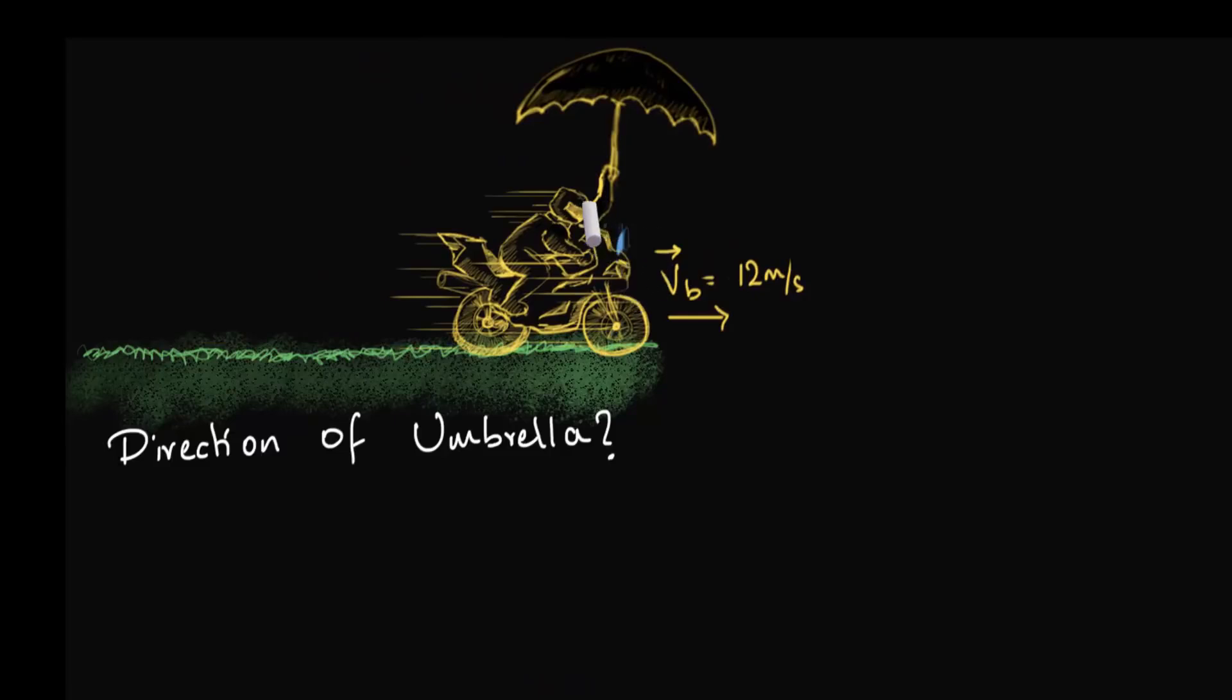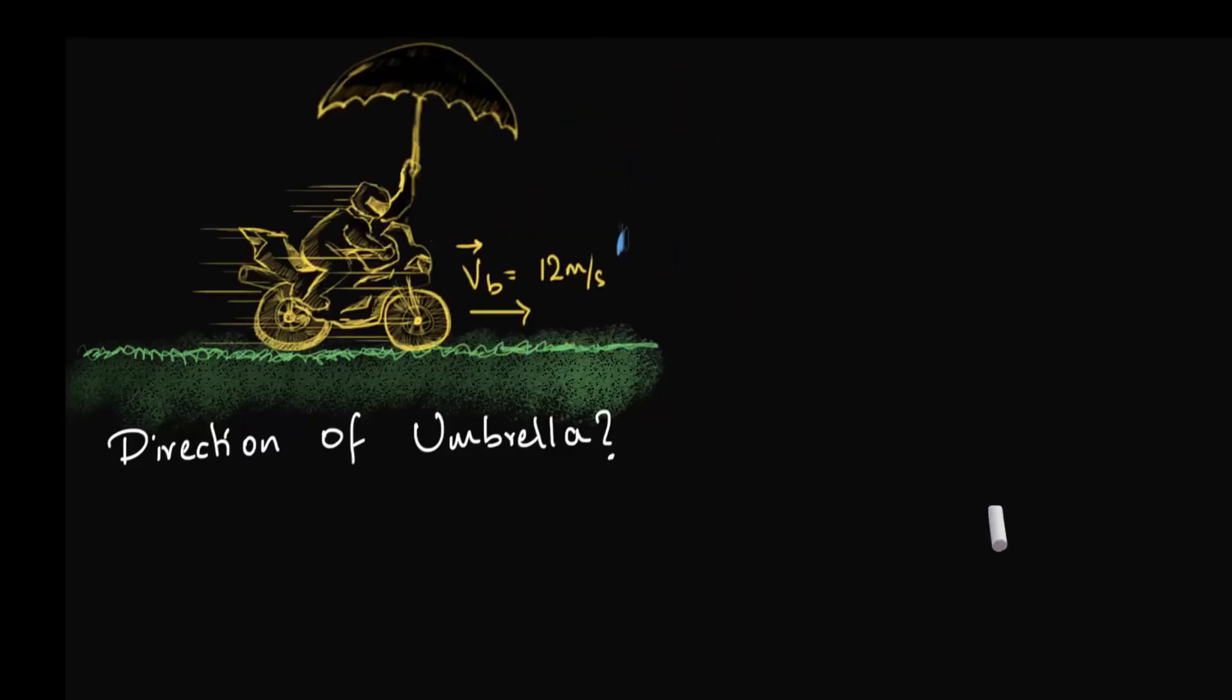In other words, your front part of the bike could get wet because of this. And so, that is not the direction in which you should hold your umbrella if you don't want to get wet.